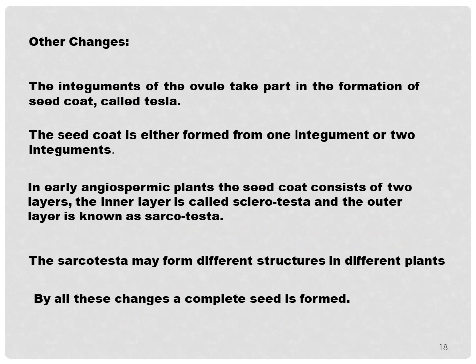Other changes: the integuments of the ovule take part in the formation of the seed coat called the testa. The seed coat is formed from one or two integuments. In early angiosperm plants, the seed coat consists of two layers — the inner layer is called the sclerotesta and the outer layer is known as the sarcotesta. The sarcotesta may form different structures in different plants. By all these changes, a complete seed is formed.